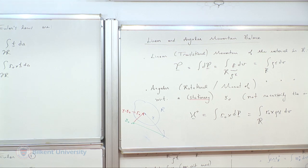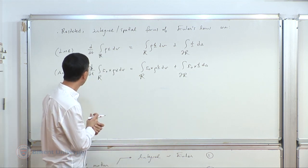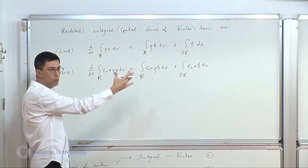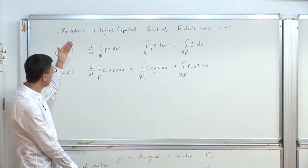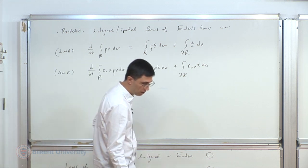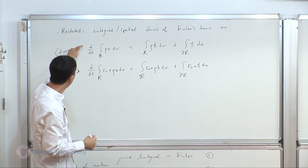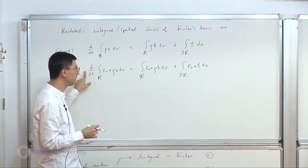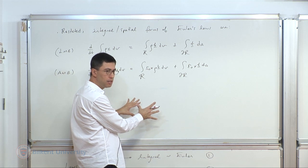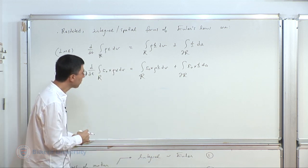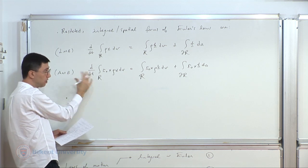Now we obtain the local forms — Cauchy's laws of motion. These are balanced laws, not conservation laws. A conservation law would require the right-hand side to be zero, meaning zero net force or zero net moment. If F equals zero or M0 equals zero, then the respective total momentum is conserved.